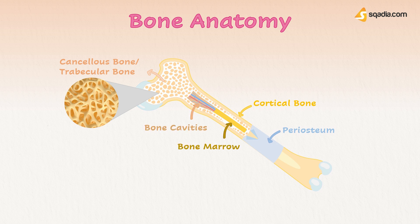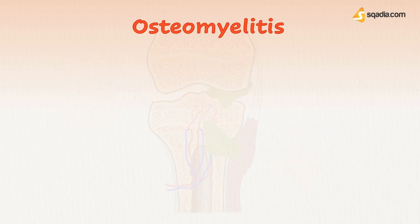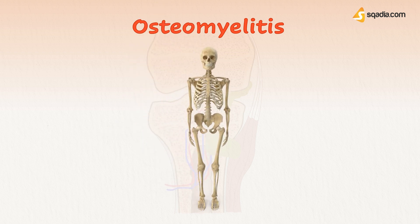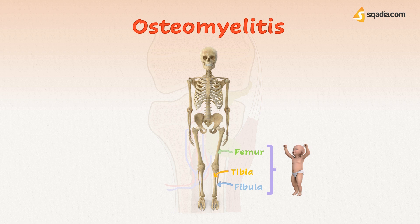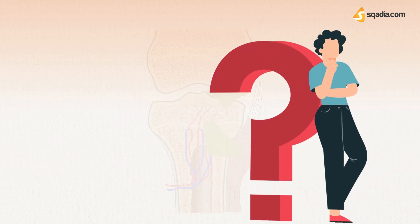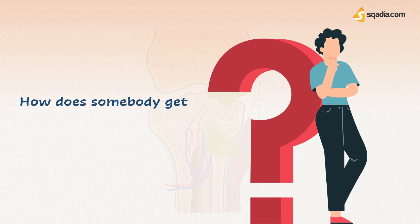Now let's talk about our first infection: osteomyelitis. Osteomyelitis is a rare infection and usually occurs in children and affects the long bones, such as the femur, tibia, and fibula. While in adults, osteomyelitis usually occurs in the spine.